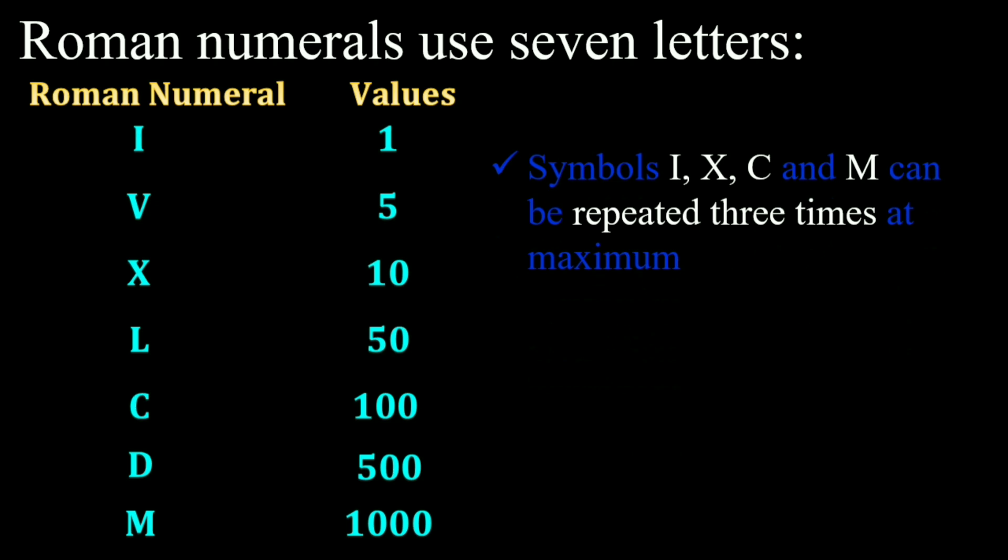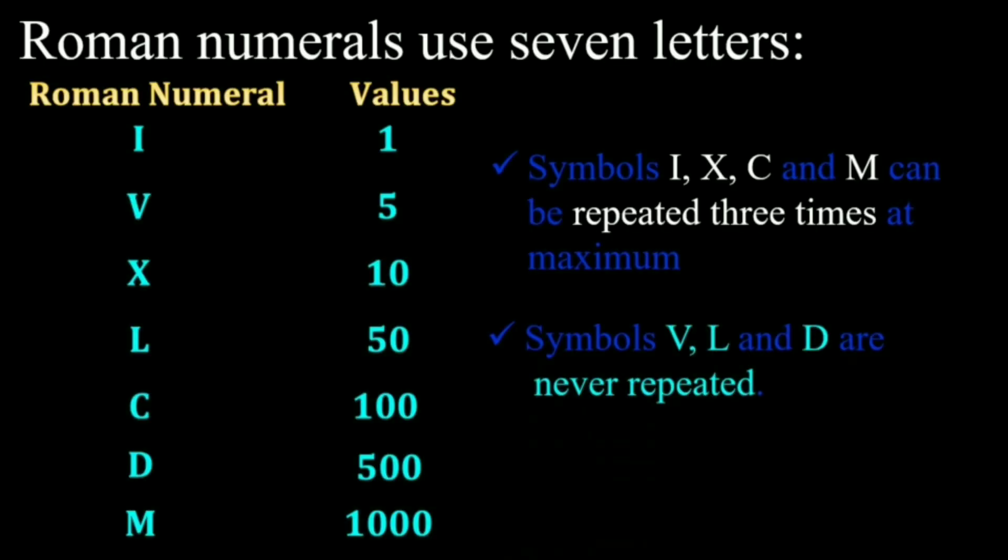We have to follow these rules to write the Roman numerals. The symbols I, X, C, and M can be repeated three times at the maximum. Symbols V, L, and D are never repeated. Let's form the table of Roman numerals using these rules.